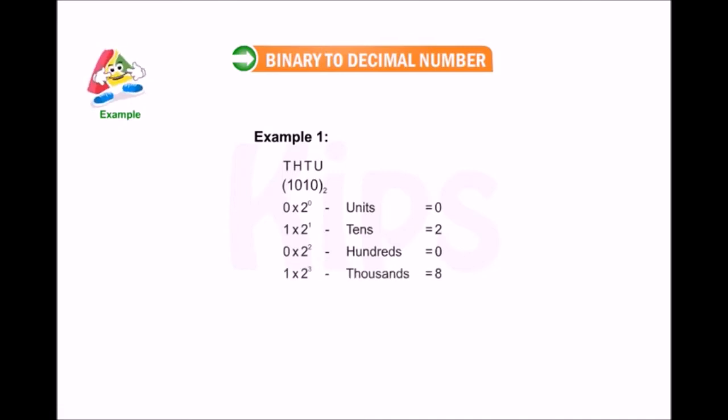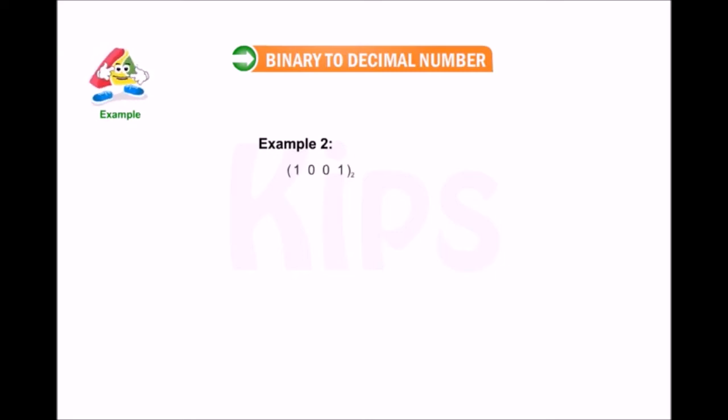And in the thousands place we get 8. Adding the decimals we get 10. Thus, 1010 in binary can be written as 10 in decimal. Example 2: Convert 1001 in binary to decimal.